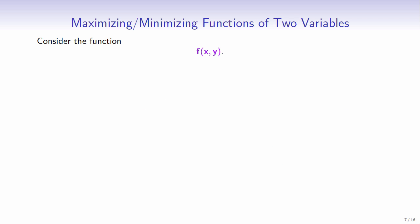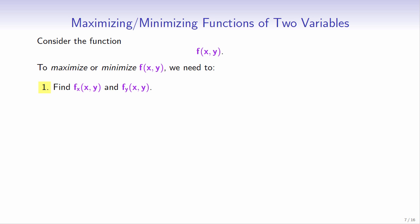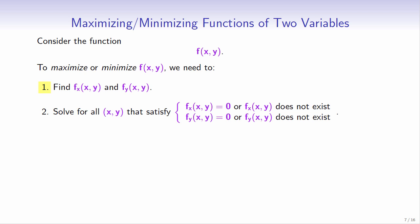Consider the function f of two variables, x and y. To maximize or minimize f, there are four steps to follow. Step 1: Find the partial derivative of f with respect to each variable. Step 2: Solve for the points (x, y) such that the partial derivatives of f at each point equal 0 or do not exist. These are called the critical values of f.